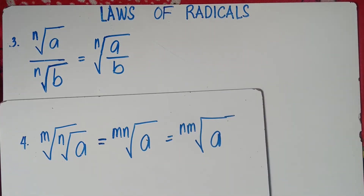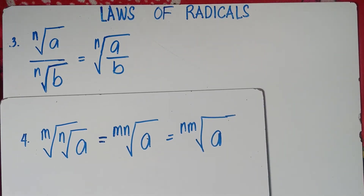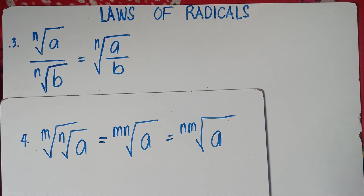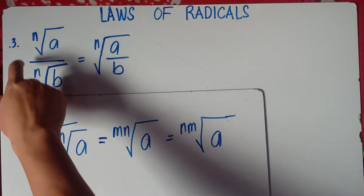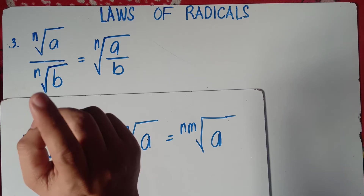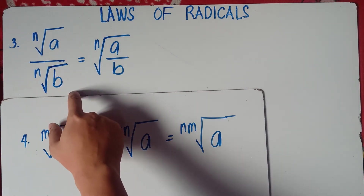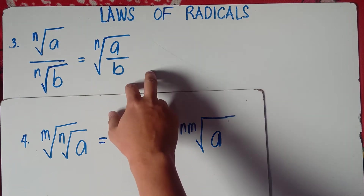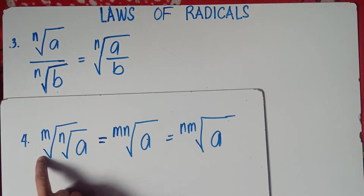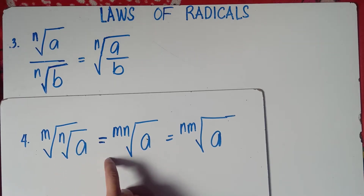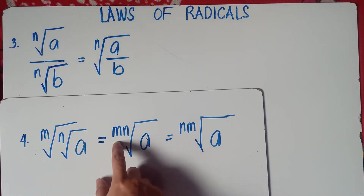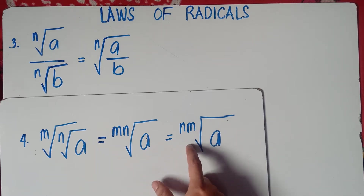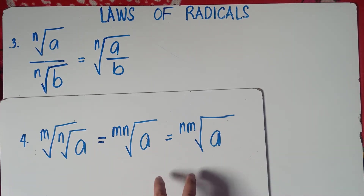This time, the third rule: the nth root of a divided by the nth root of b is equivalent to the nth root of a over b. So if you have the same index, you can simply divide the radicands a and b. And for number 4, we have the m-nth root of a, which is equivalent to the mn-th root of a — or you can interchange to nm-th root of a.